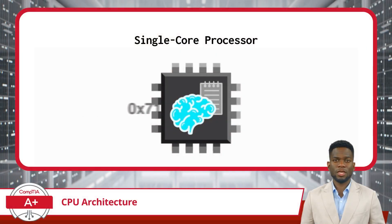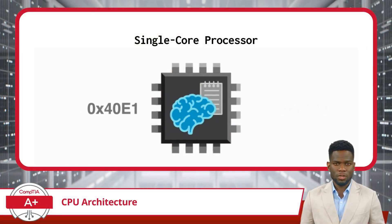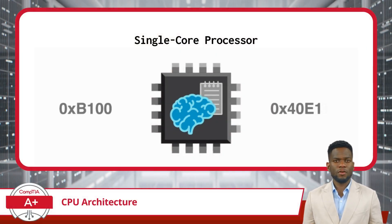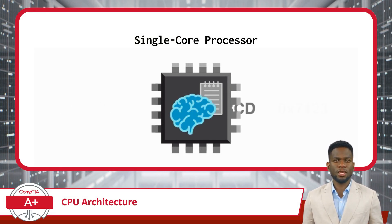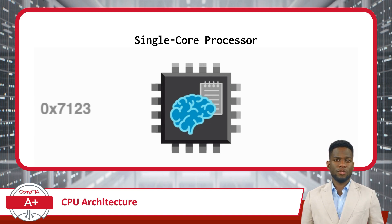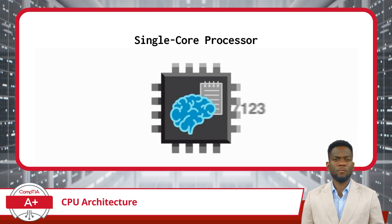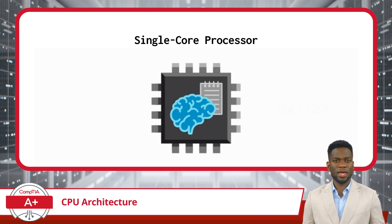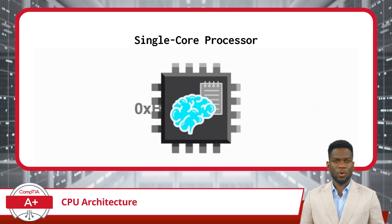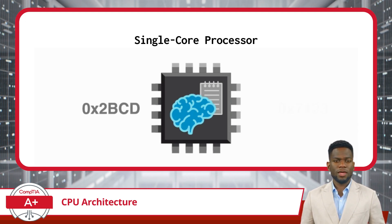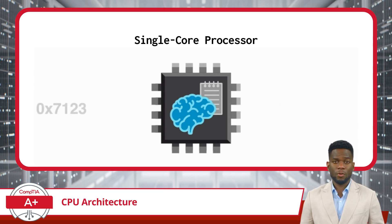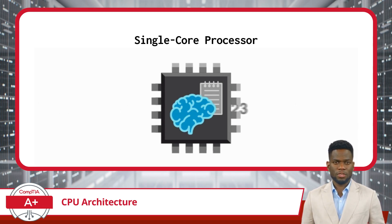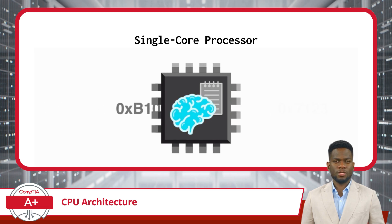When discussing CPU architecture, it is also important to consider the number of cores housed within a processor. A single-core processor operates with just one processing unit, meaning it can only handle one task at a time. While single-core processors were once standard in computing devices, they have gradually been replaced by multi-core alternatives due to their inherent limitations in multitasking and processing power.